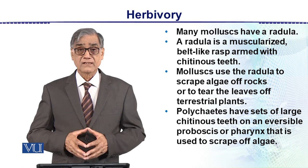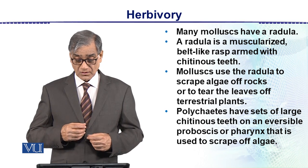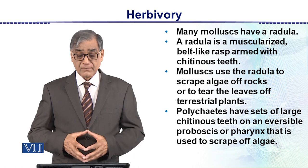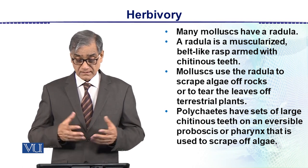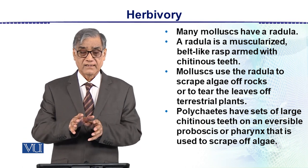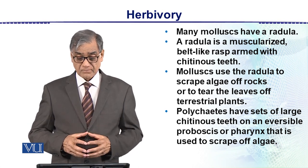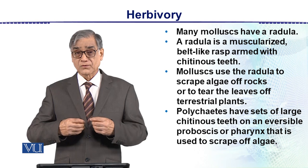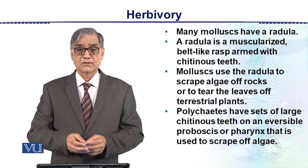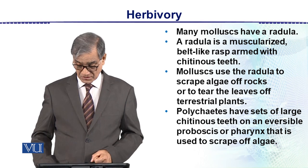Polychaetes have sets of large chitinous teeth on a reversible proboscis or pharynx that is used to scrape algae. These animals turn their mouth inside out — they evert the pharynx or proboscis outward, and then use those chitinous structures to scrape algae.